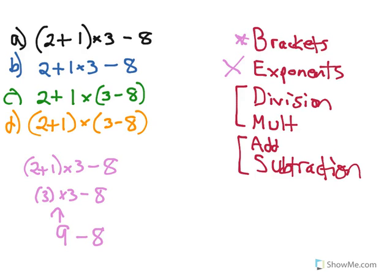There's no more division or multiplication. Move on to addition and subtraction. 9 minus 8 equals 1. So the answer to this first one is 1, and I'll keep all the answers here to see how it changes. Again, if you follow BEDMAS, you can't go wrong.